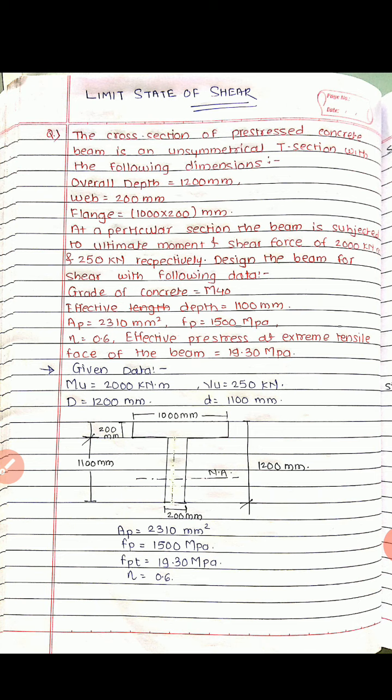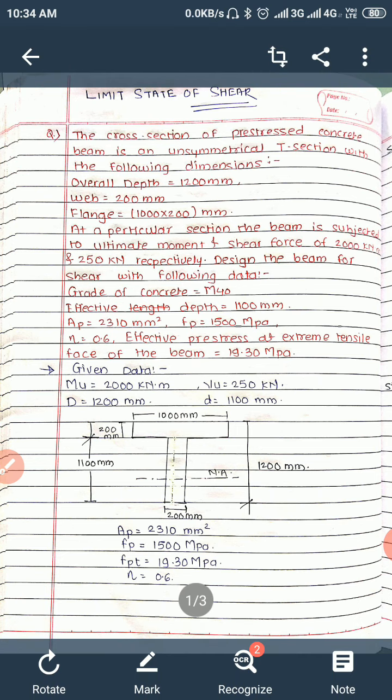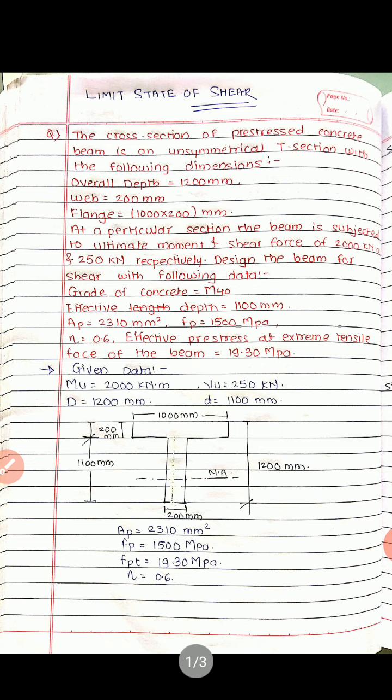Further given data: effective depth is 1100 mm, Ap equals 2310 mm², fp equals 1500 MPa, the efficiency ratio η equals 0.6, and the effective prestress at the extreme tensile face of the beam is given as 19.30 MPa. This is all the given data.